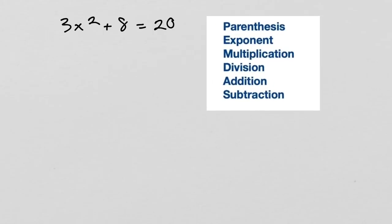3x squared plus 8 equals 20. Solve for x. Here again, we want to get the x on one side of the equation. In order to do that, we have to get rid of the multiplication by 3, the exponent 2, and the plus 8. We will use the reversal of the order of operation to know which one to perform first. Let's bring our order of operation. So, here is our order of operation.